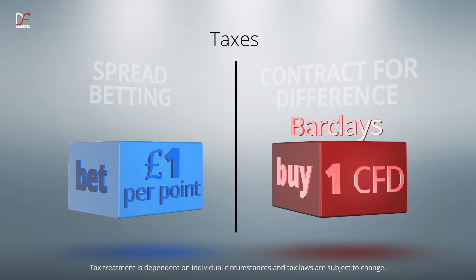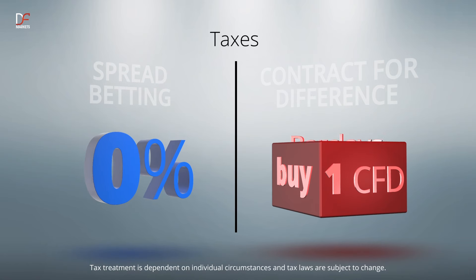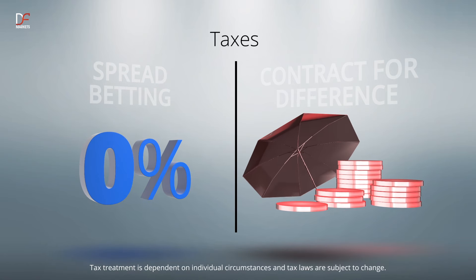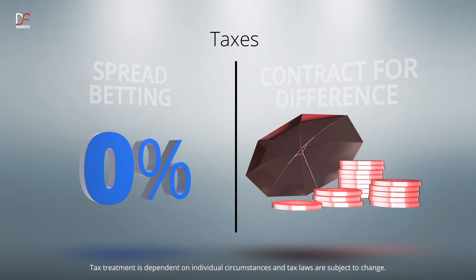Spread betting profits are currently free of capital gains tax. However, CFDs are liable. While this may seem a major drawback, any losses can be offset against future profits for tax purposes.